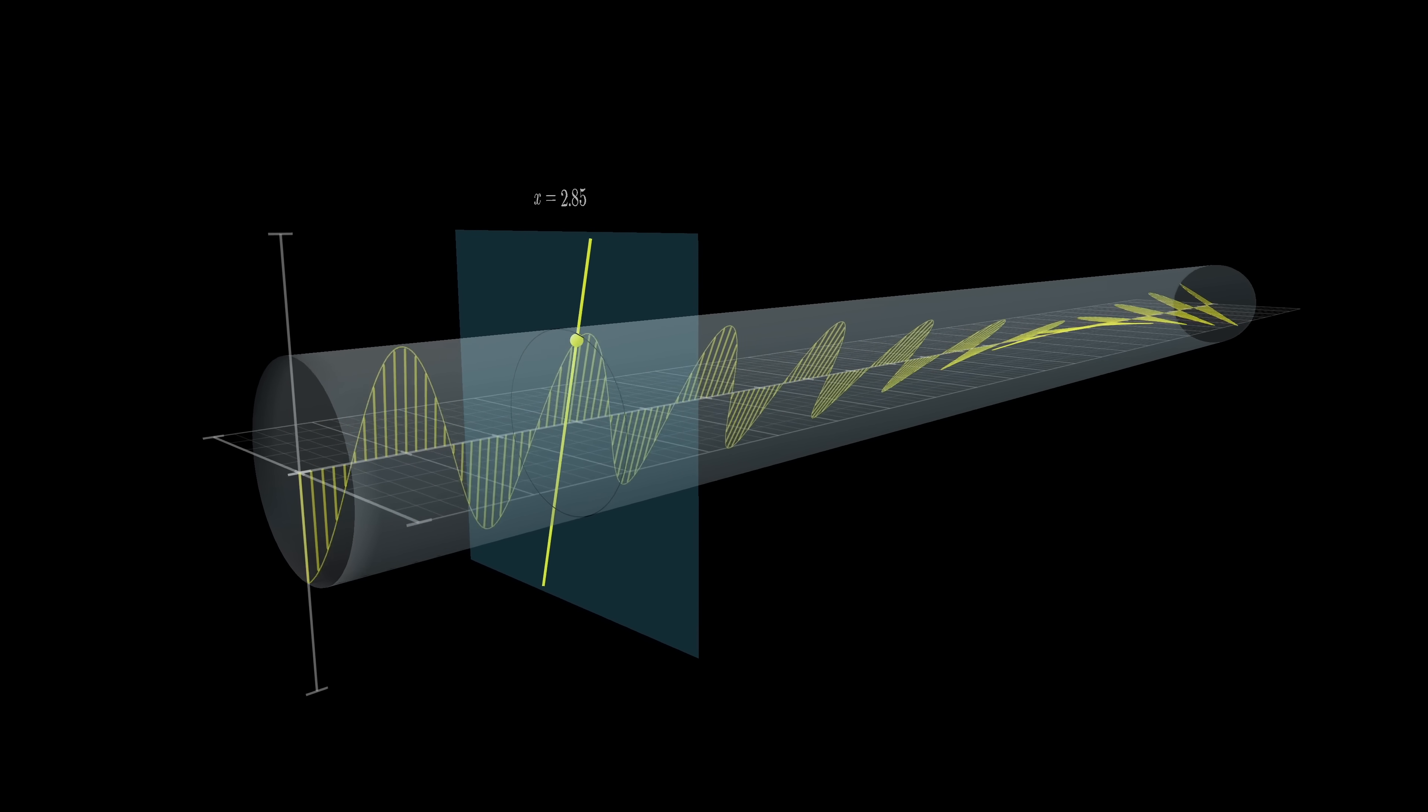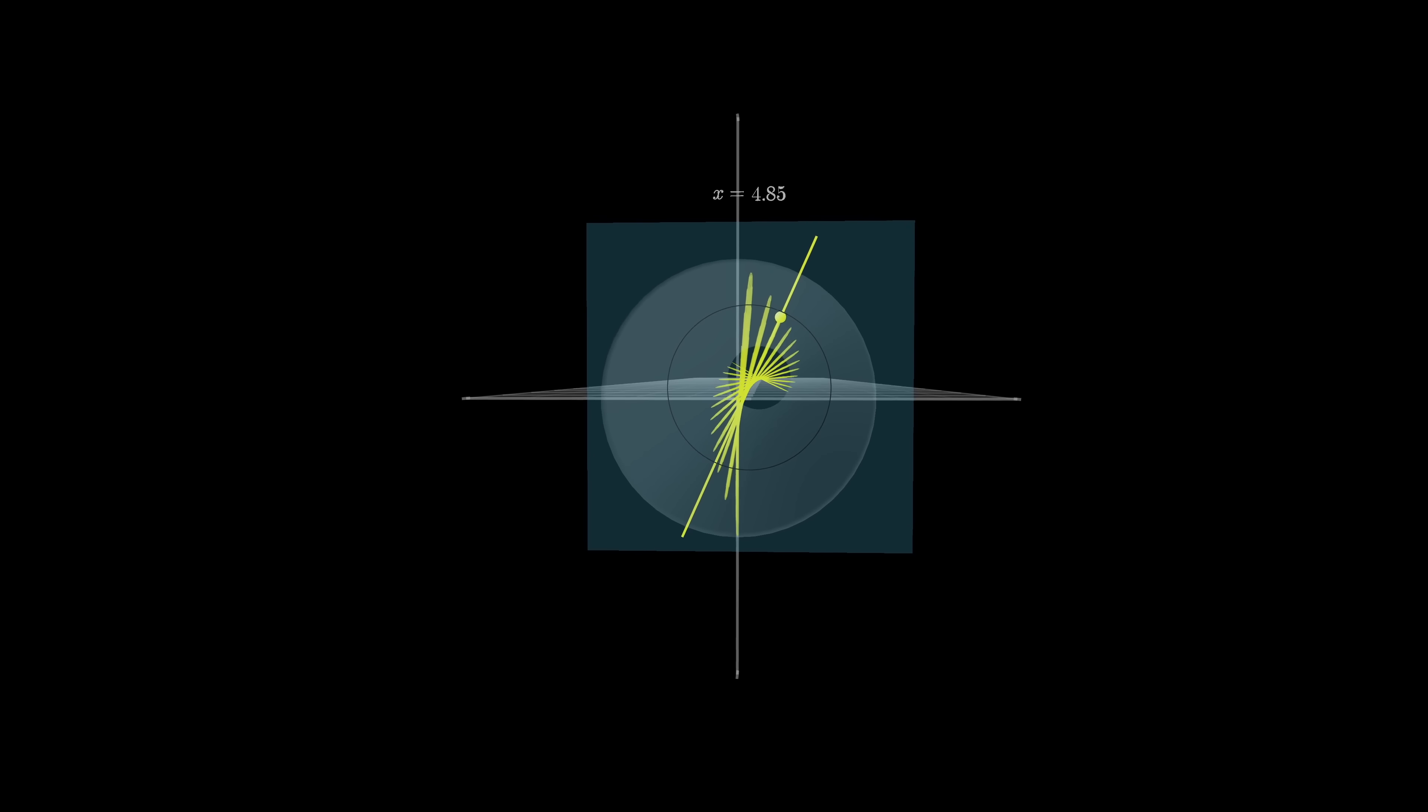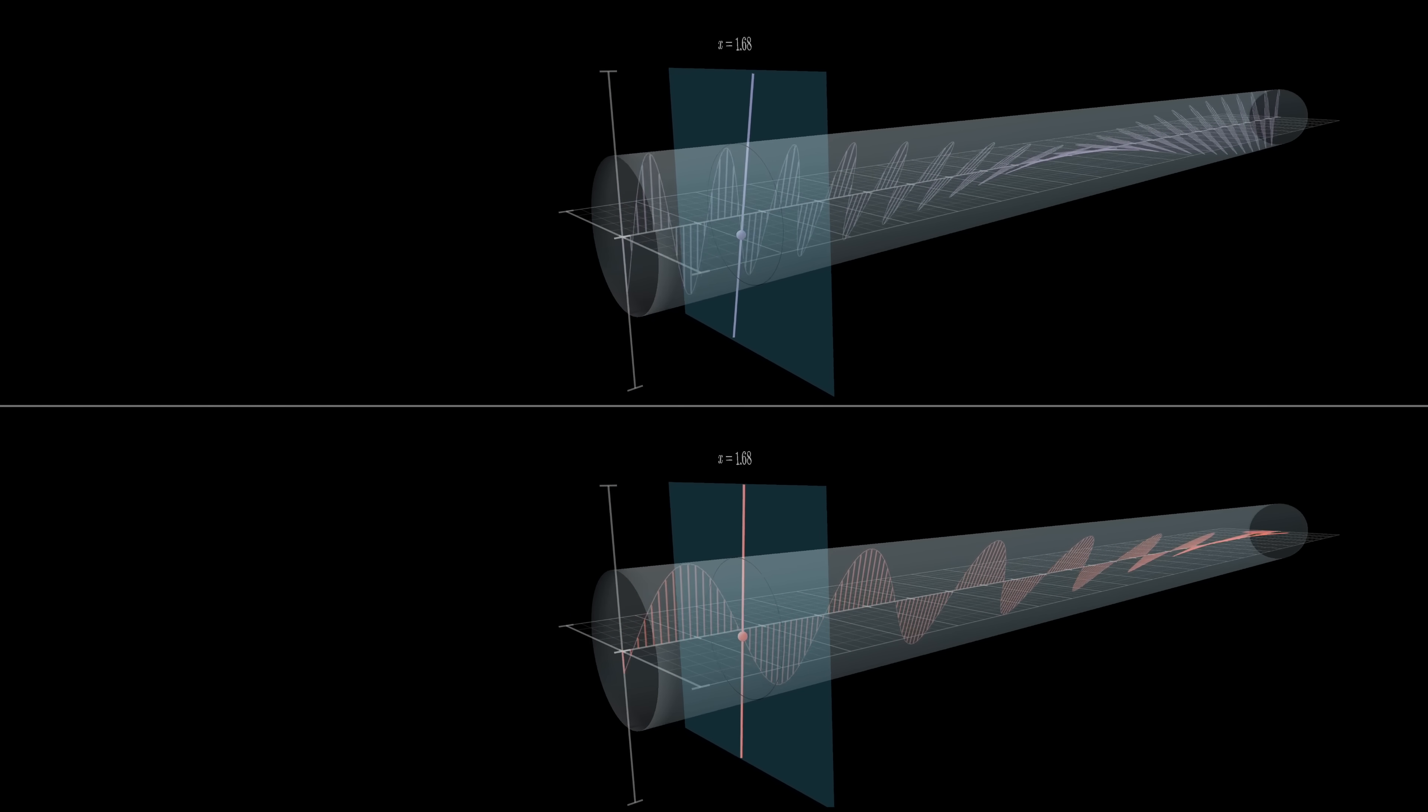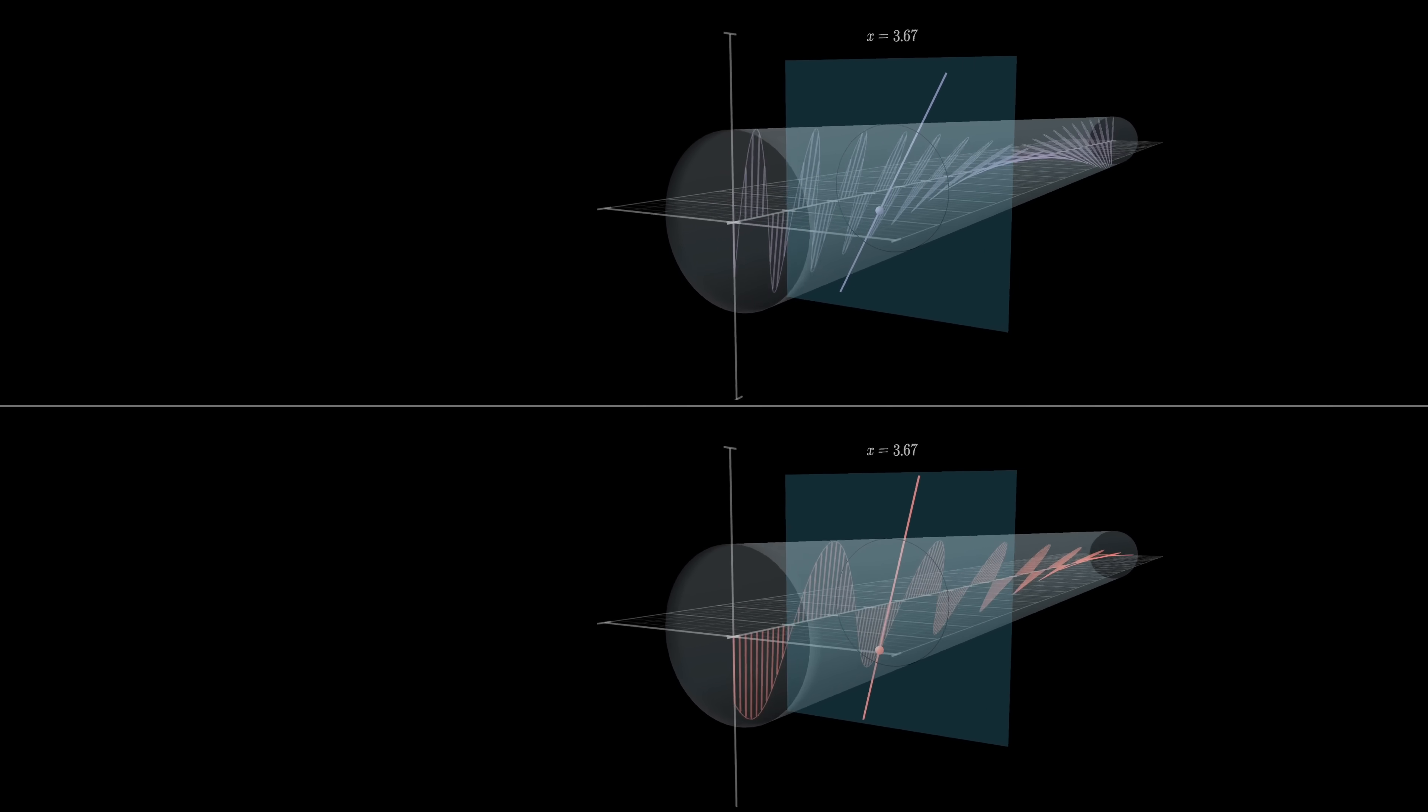Critically, the rate at which it's getting twisted depends on the frequency of the light. Higher frequency light, say violet, actually gets twisted more quickly than low frequency light like red.